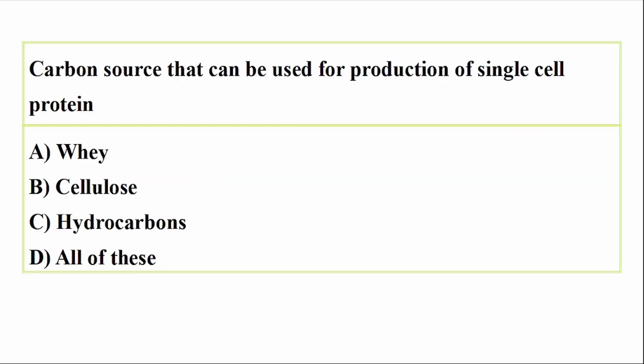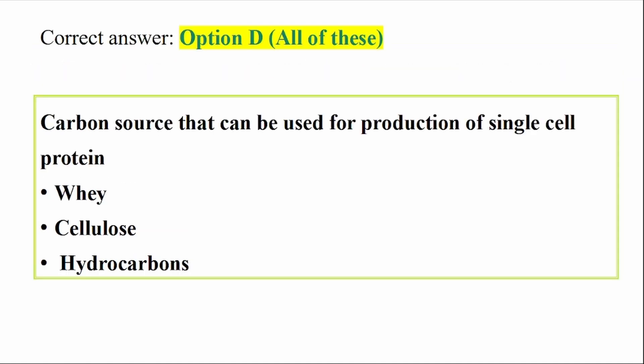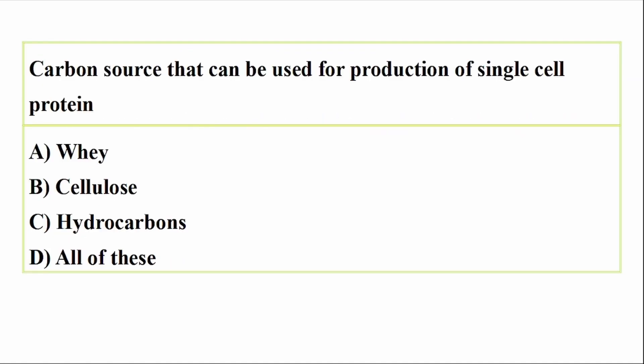Question: What is the carbon source that can be used for production of single-cell protein? Options: B - cellulose hydrocarbons, and all of these. Correct answer: option D, all of these.